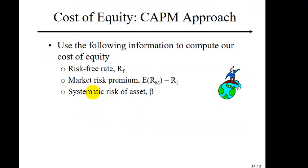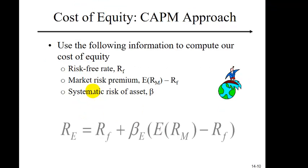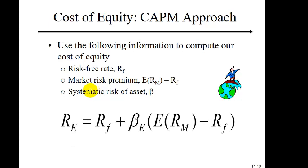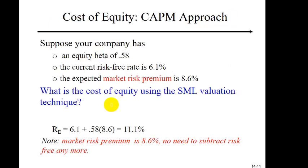Now let's look at the alternative approach for cost of equity: the CAPM model. To use this model, you need information on the risk-free rate, market risk premium, and beta. Suppose a firm's equity beta is 0.58, the risk-free rate is 6.1%, and the market risk premium is 8.6%. Using the CAPM, cost of equity is simply 6.1 + (0.58 × 8.6) = 11.1%. Note that market risk premium is already 8.6 — no need to subtract the risk-free rate again.